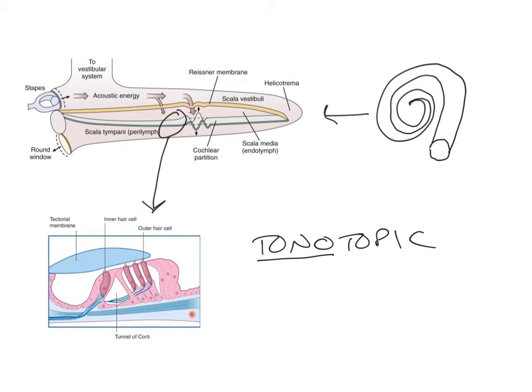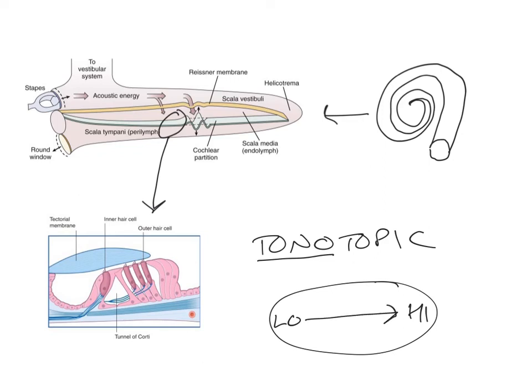This tonotopic representation also extends further: when we look at the central nervous system nuclei responsible for processing sound, and even at the auditory cortex, different frequencies occupy different parts of the brain. So in a hypothetical nucleus processing sensory information from the cochlea, low frequencies will be represented at one part of the nucleus, high frequencies at the other part, and all the intermediates in between. It's just like a somatotopic representation, but for sound instead.